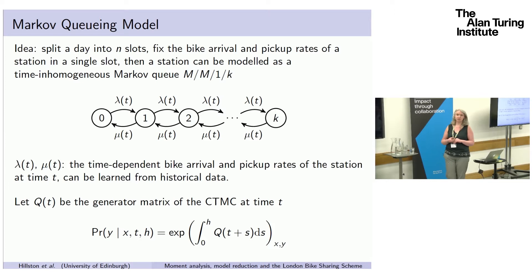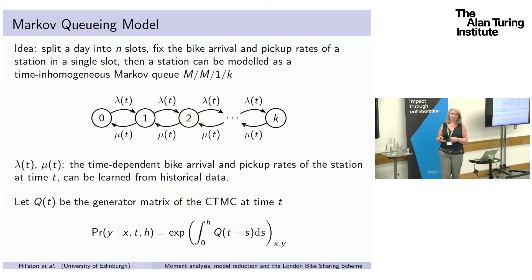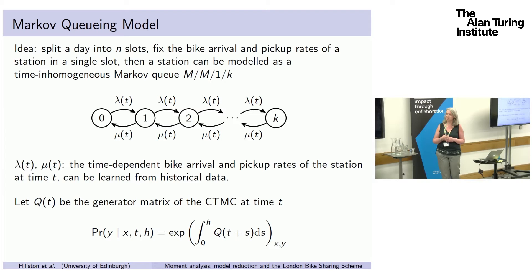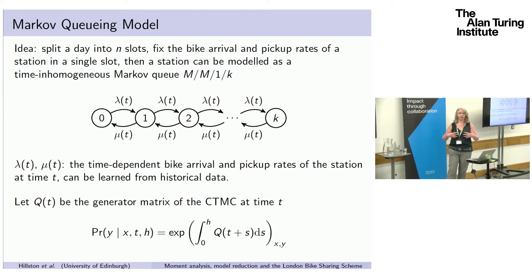The other stochastic models we found in the literature were rather naive, based on just a queuing abstraction of a single station at a time. You treat the arrival of a bike to fill a slot as a Poisson arrival process, and somebody taking a bike as the service process, and you've got a straightforward queue with bounded capacity. The complication is that these are not time homogeneous processes because the characteristics vary a lot during the day. In the morning there's much more flow into the city centre, much more flow out in the afternoons.